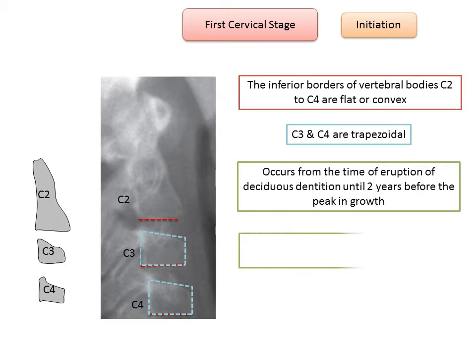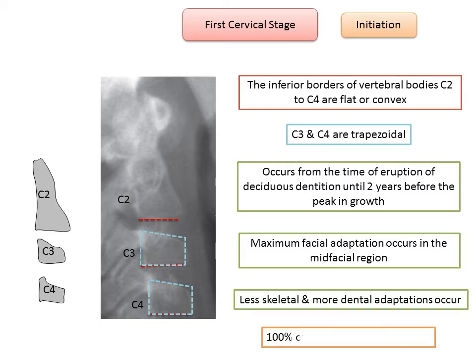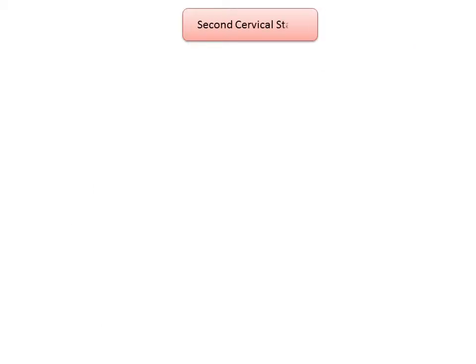Maximum skeletal adaptations occur in the mid-facial region during CS1, as the sutures are more open in the younger patient. Less skeletal and greater dentoalveolar adaptations are noted when rapid maxillary expansion is combined with myofunctional therapy during later stages. One hundred percent of pubertal growth remains in the first cervical stage.